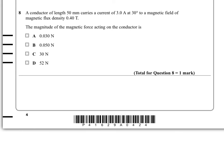Question 8 then. A conductor of length 50 millimeters carries a current of 3 amps at 30 degrees to a magnetic field of flux density 0.4 tesla. The magnitude of the magnetic force acting on the conductor is one of these values.